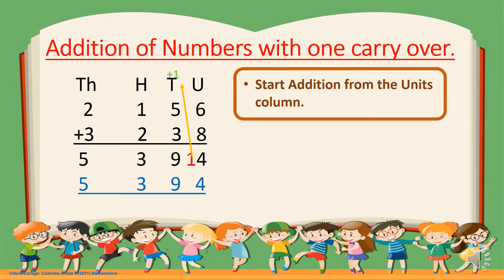We are going to add numbers with 1 carryover. Here you can see there are 2 numbers — 2 four-digit numbers. So here you have 4 place values: Units, Tens, Hundreds and Thousands. We are going to start addition from the units column. And always make sure to place the plus sign in your sum, because that is how you can identify the mathematical operation which you have to use in the given sum. So here this is addition.